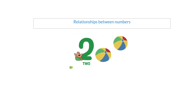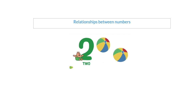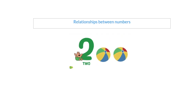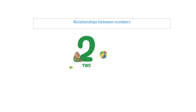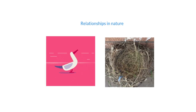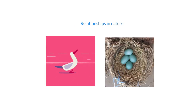But now we're going to learn about the relationship between numbers. As you can see here in this picture, there's a relationship between the number two and the two balls, so there is a relationship between objects and their value.